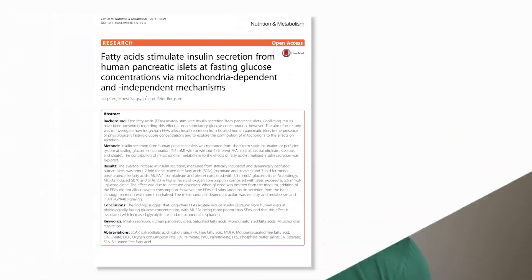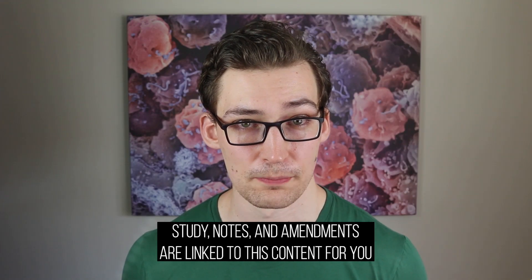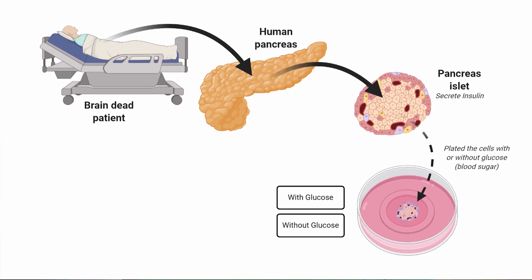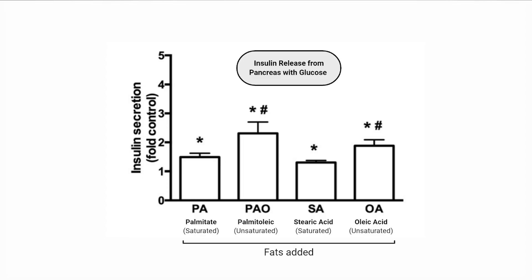This information comes from data in a study that is linked for you, as well as my notes and any amendments that may follow. The researchers took pancreas islets — the section that generates insulin — out of brain-dead patients and plated them in media, the liquid that nourishes the cells, that was devoid of glucose or contained low amounts, emblematic of a fasting state. Then they added one of four fats: palmitate and stearic acid, being saturated fats, and oleic and palmitoleic acid, being monounsaturated fats, and measured insulin release from the pancreatic cells.